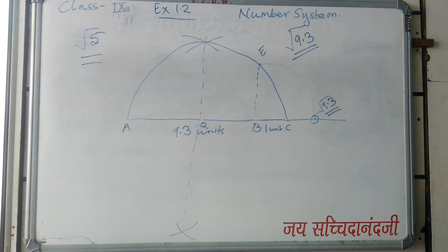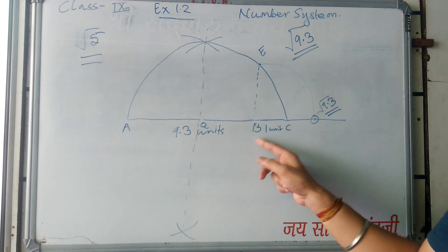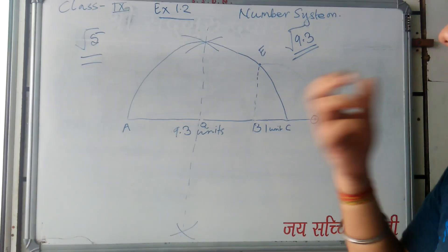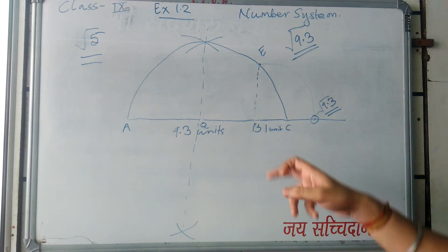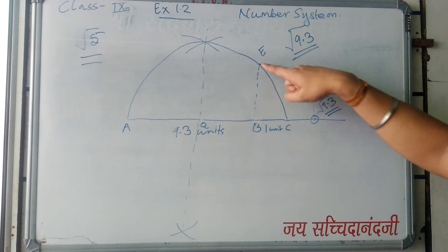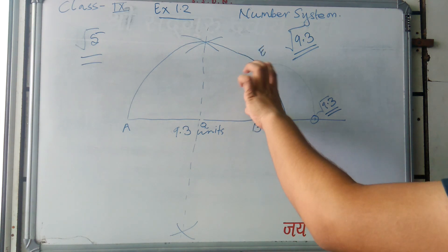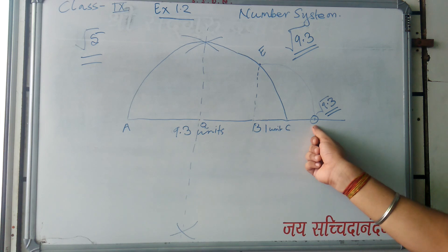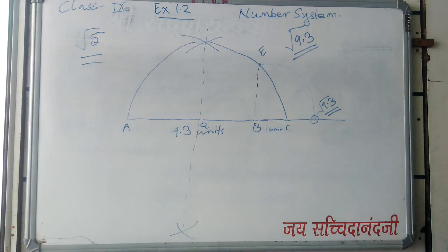I hope the method was clear. You can form the steps of construction yourself: draw a line AB of 9.3 units, extend B to C by 1 unit, find the geometric center of AC, draw a semicircle from A to C, draw a perpendicular from B intersecting the semicircle, name that point E, measure BE and cut an arc intersecting the line — this point is your required point on the number line.